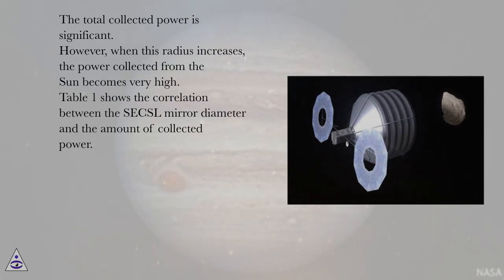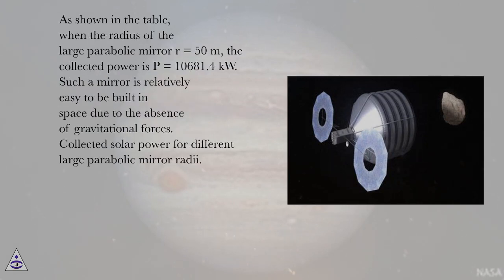Table 1 shows the correlation between the SECSL mirror diameter and the amount of collected power. As shown in the table, when the radius of the large parabolic mirror R = 50 meters, the collected power is P = 10,681.4 kilowatts. Such a mirror is relatively easy to be built in space due to the absence of gravitational forces.